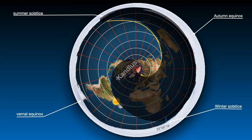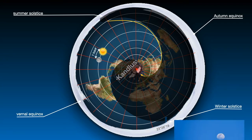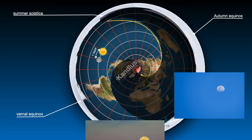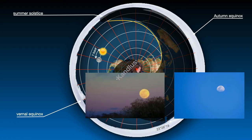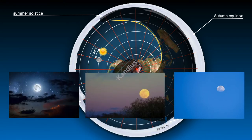Therefore, according to the latitude of the moon and observations, it takes about 25 hours for the moon to orbit. That is why we can see the moon in the morning, noon and night at different times and places.